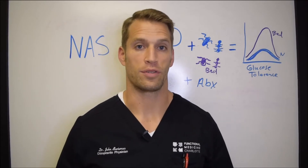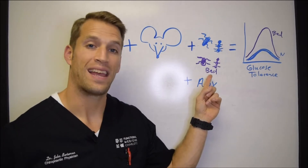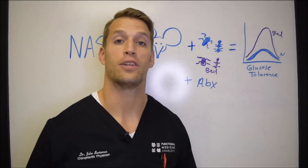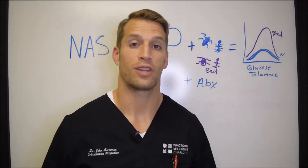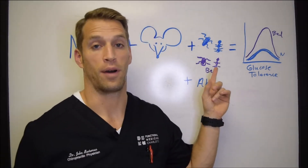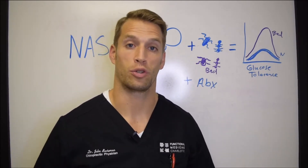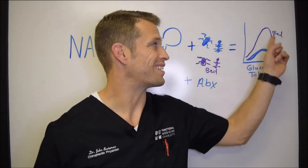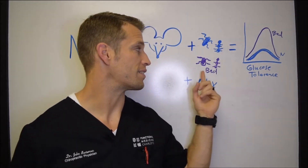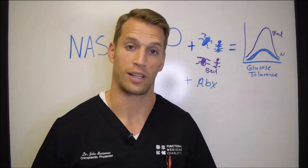Another way they proved it was by taking mice with bad microbiota and transplanting those bugs into germ-free, sterile mice. They took bad bugs from other mice and transplanted them into the sterile mice. The sterile mice went from good glucose tolerance to the purple glucose intolerance curve — strong evidence that the makeup of your gut microbiome directly influences your ability to regulate your blood sugar.